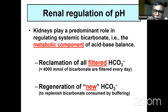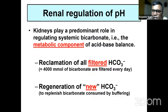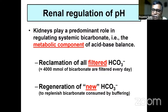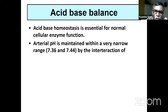Kidneys play an important role in regulating systemic bicarbonate — the metabolic component of acid-base balance. Kidneys reclaim all filtered bicarbonate in the urine: 4,000 millimoles of bicarbonate is filtered every day in a normal kidney and the entire amount is reclaimed. In addition, new bicarbonate is generated in the kidney — about 70 milliequivalents — which is the net acid excretion by the kidney, compensating for the non-volatile acids produced by amino acid metabolism.